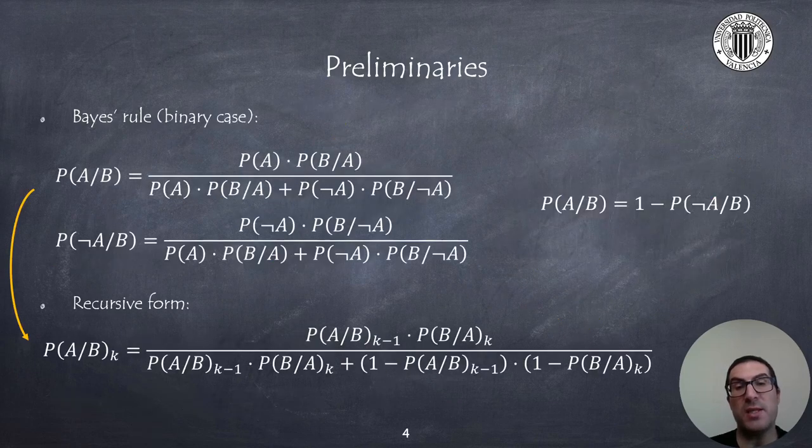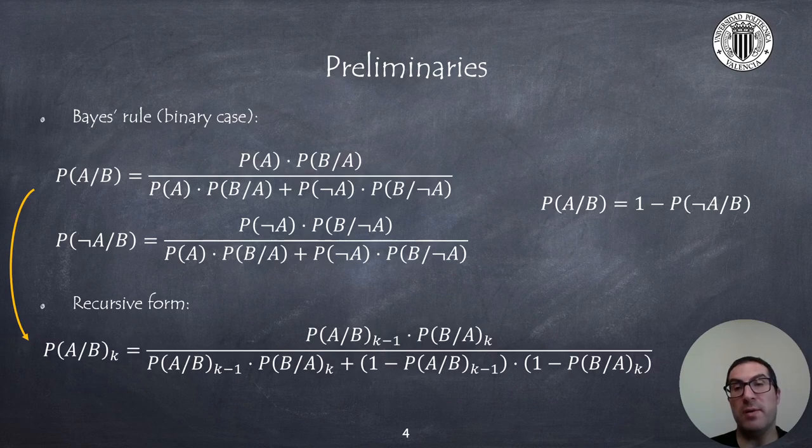For the specific case in which the sample space is binary, which means there are only two possible events—for example, heads or tails, occupied or not occupied, open or closed—the formula of Bayes' rule simplifies to the expression shown. Since we only have two possible events, the probability of one event is just the complementary probability of the other one.